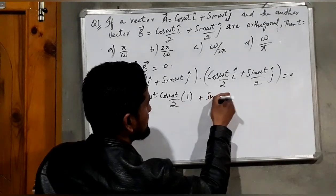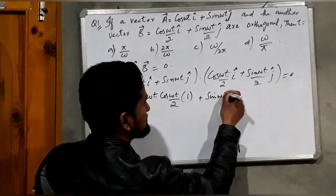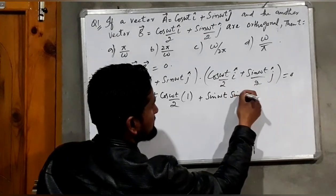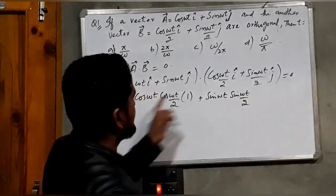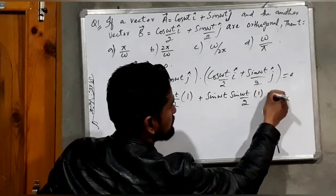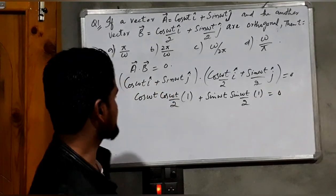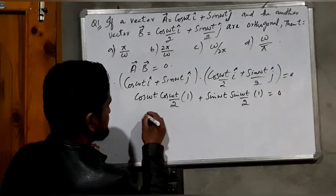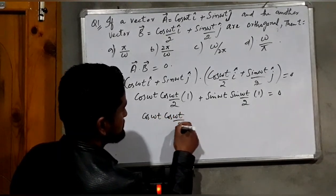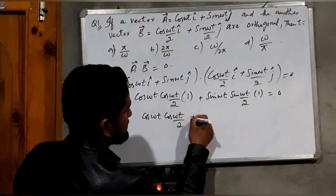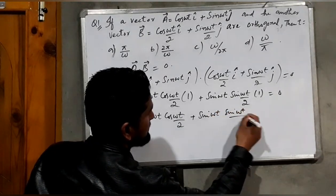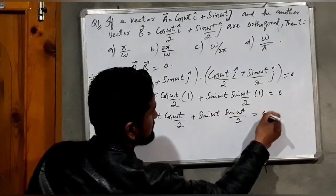Continuing the dot product — sin(ωt) into sin(ωt/2), and ĵ · ĵ is always equal to 1, equals zero. So this gives us cos(ωt)·cos(ωt/2) + sin(ωt)·sin(ωt/2) equals zero.